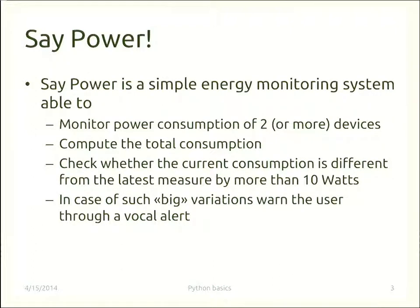We want to get information from both networks and sum up the consumption. When the consumption differs from the last sample we read by more than 10 watts, the idea is to say 'pay attention, something is changing in the power consumption' because we have a variation of more than 10 watts.